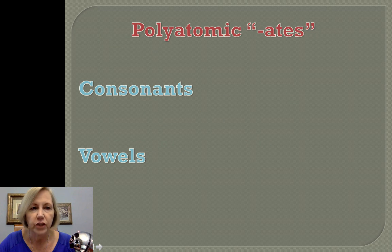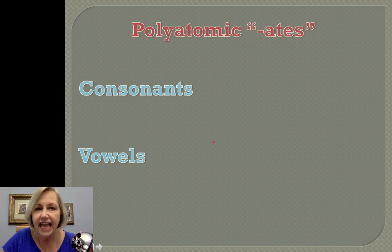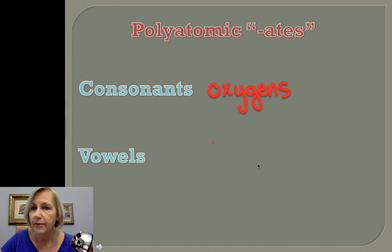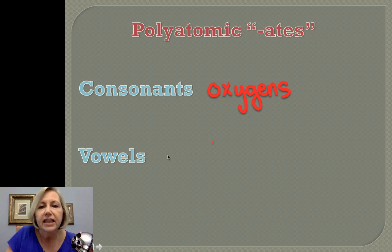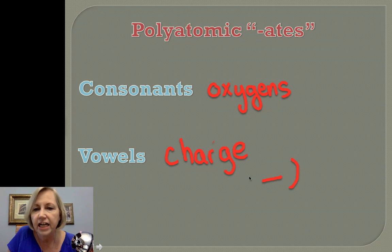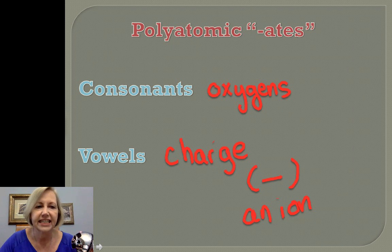When we do this strategy, what we're going to be looking at are key words in a phrase. The consonants in those words are going to tell us the number of oxygens present in the polyatomic ions — so this is for the oxy ones. The vowels are going to help us learn the charge. For this group of polyatomic ions, they are all anions with a negative charge — so a negative ion. You can kind of see that in the word itself.